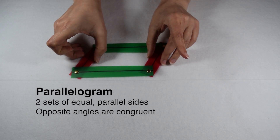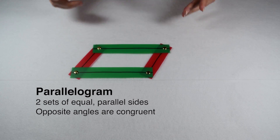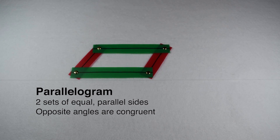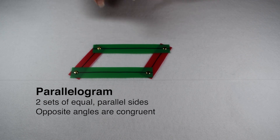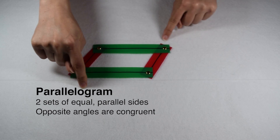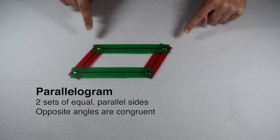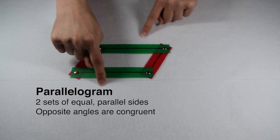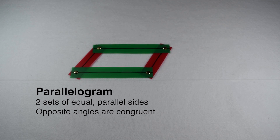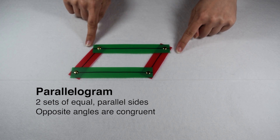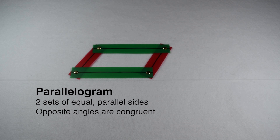In order for a figure to be a parallelogram, it needs to be a quadrilateral and have four edges. From there, we need to look for two sets of parallel edges, meaning the top and bottom edge are never going to cross, touch, or intersect, and the left and right edge are never going to cross, touch, or intersect.